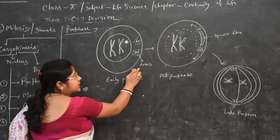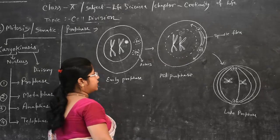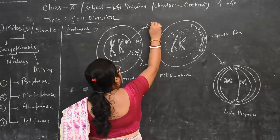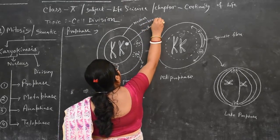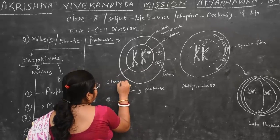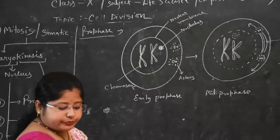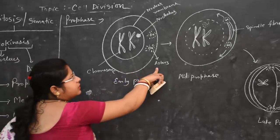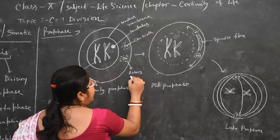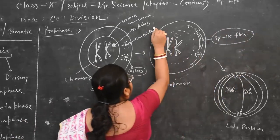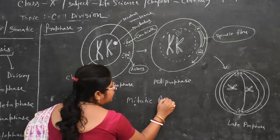Asters are formed from the centrosome, and the spindle fibers are formed from nuclear material. Asters, spindle fibers, and the centrosome together form the mitotic apparatus.